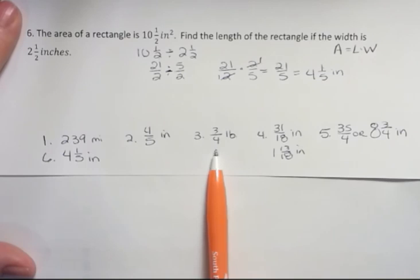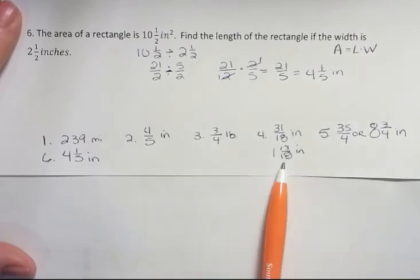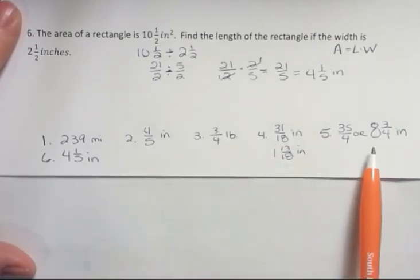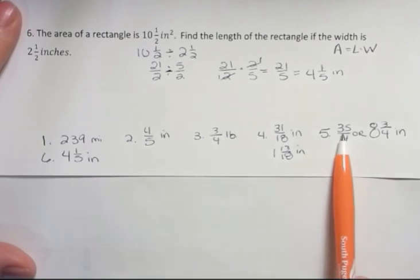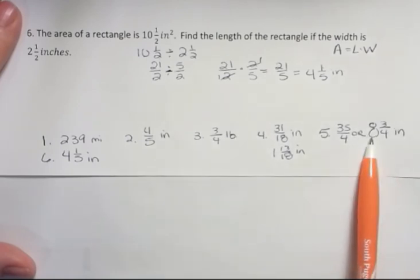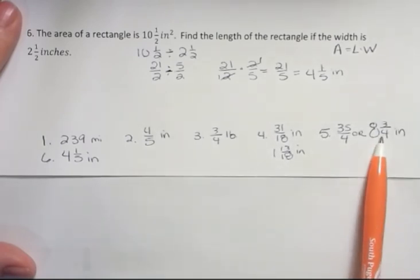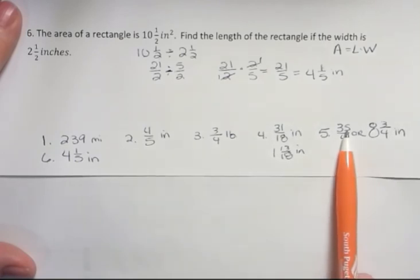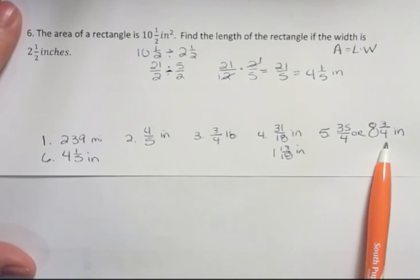For number 4, it rained about 1 and 13 18ths of an inch or if you left it as an improper fraction, 31 18ths. For number 5, a person's wrist size is going to be about 8 and 3 quarters inches. If you're taking 35 times 1 fourth, you get 35 fourths, which is about 8 and 3 fourths.